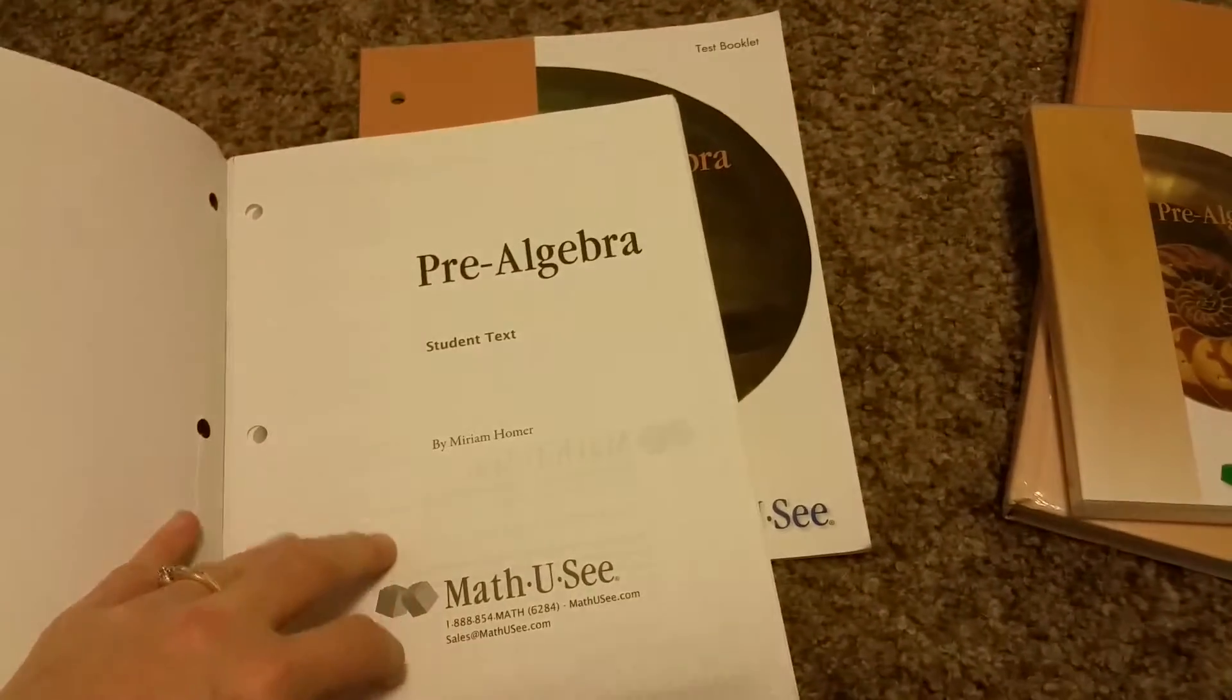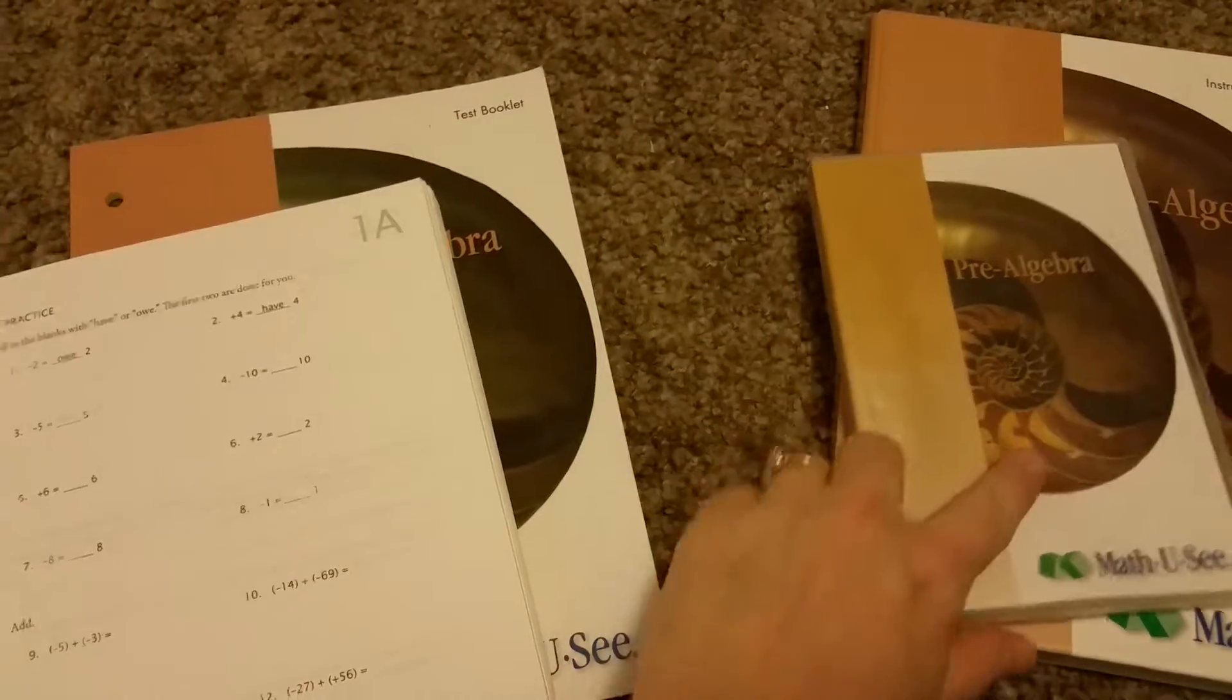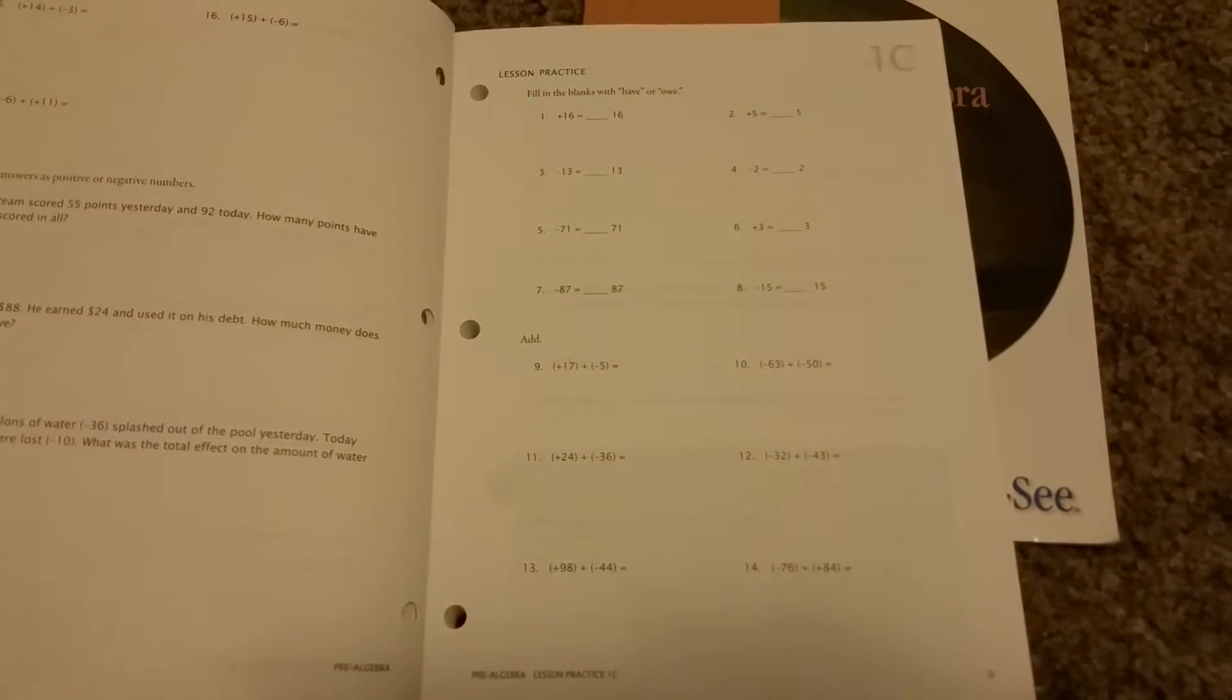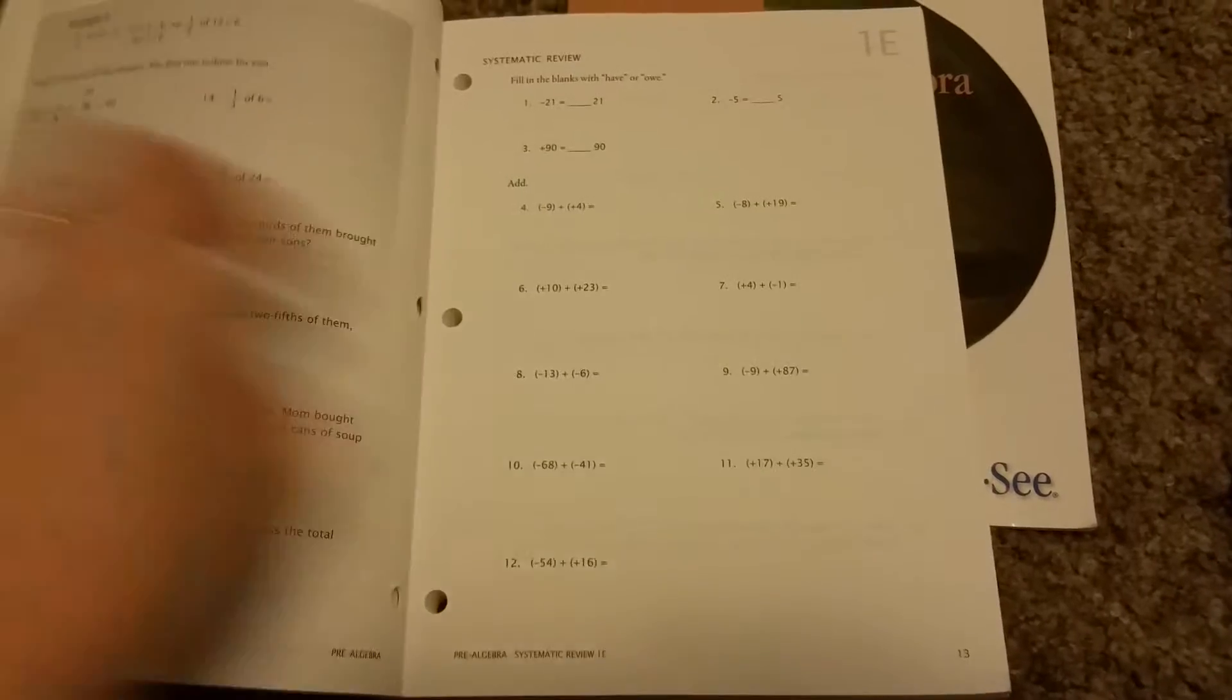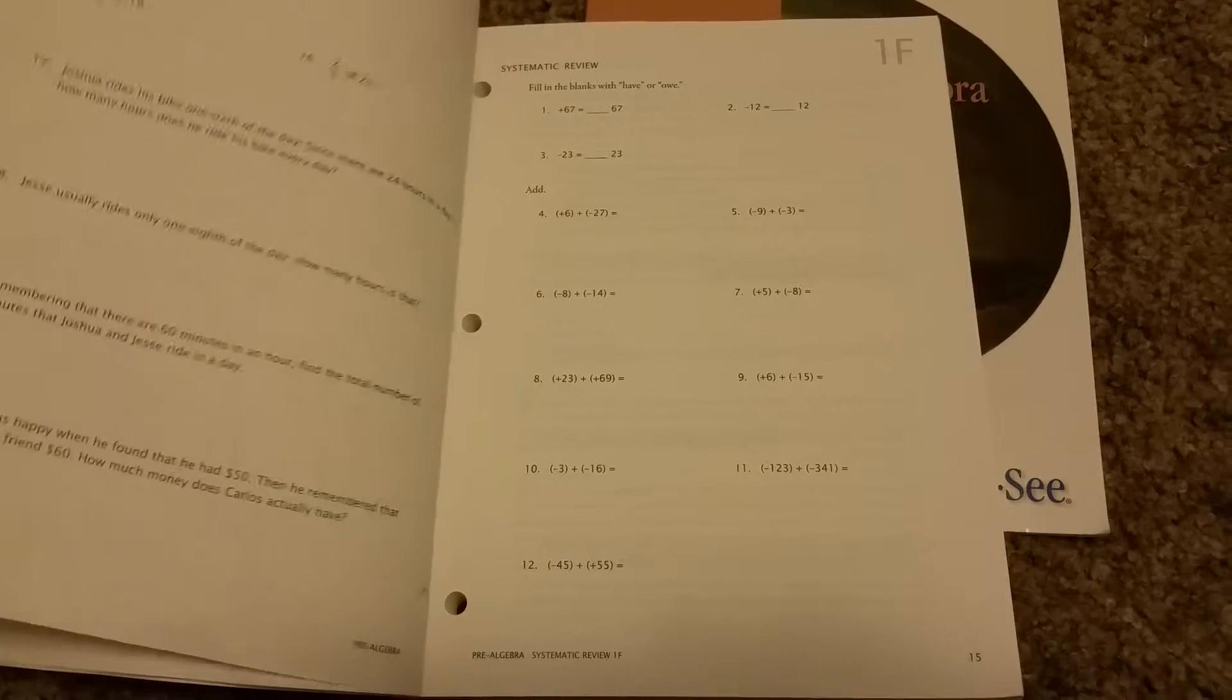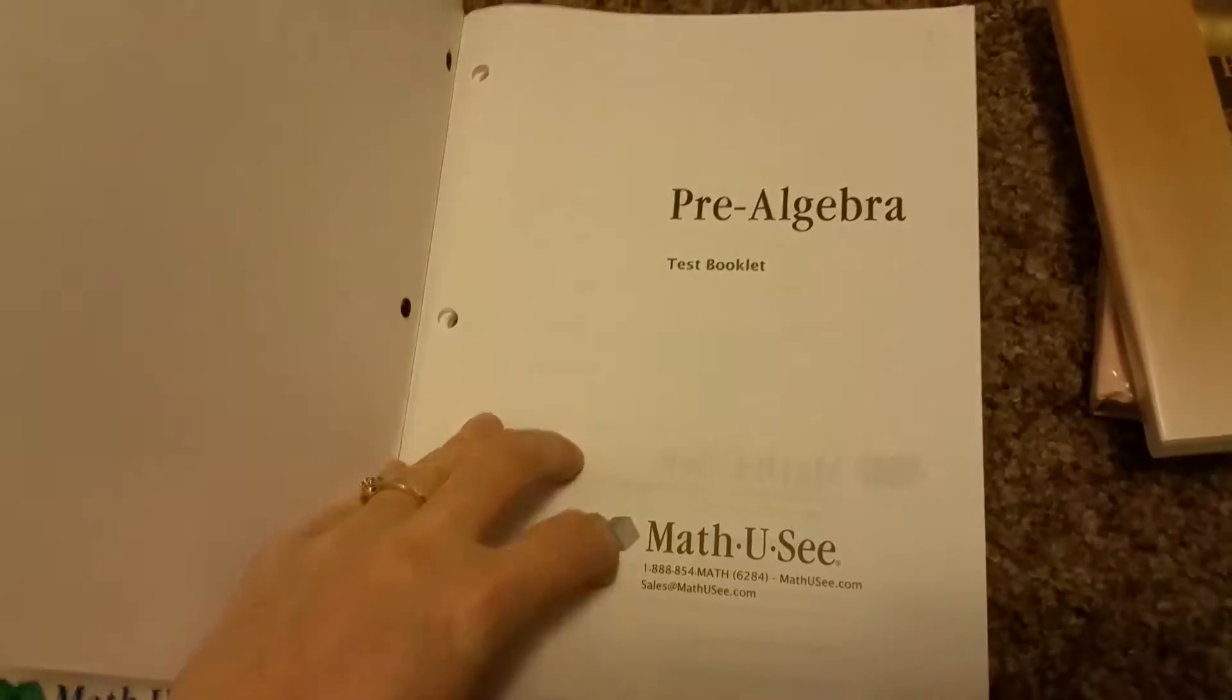It's still broken up the same way as the other one where you watch the lesson on the DVD and then you have your worksheets. You have A, B, and C for your new concept that you learned. Then the next day you do D, E, and F, and that's review, so it mixes what you just learned with what you've learned before. Then you do the test on the third day.